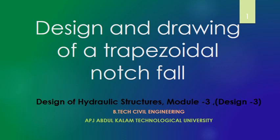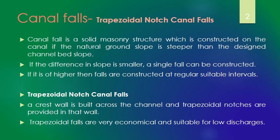Hello students, today we are going to learn the design and drawing of trapezoidal notch fall, which is included in the design of hydraulic structures, module 3 of BTEC civil engineering of APJ Abdul Kalam Technological University. A canal fall is a solid masonry structure constructed on the canal when the natural ground slope is steeper than the design channel bed slope. Canal falls are used to convert that steeper natural ground slope to the design bed slope. The trapezoidal notch canal fall is a type of canal fall — very economical and suitable for low discharges.